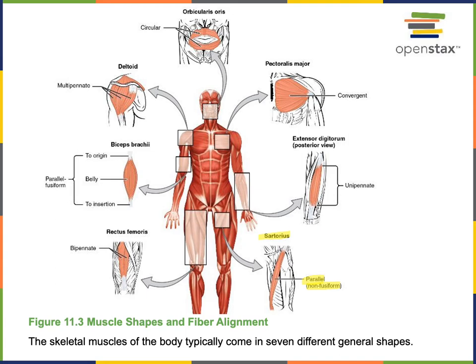In contrast, biceps brachii, found on the anterior brachial region, has a parallel fusiform arrangement where the muscle is wider in the center of the belly and is tapered towards the tendons. This enables a larger number of muscle fibers to be packed into this muscle organ to produce a larger amount of force.